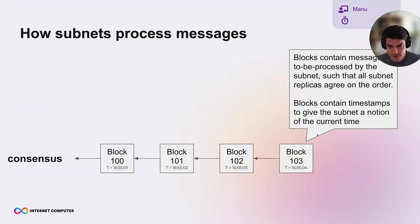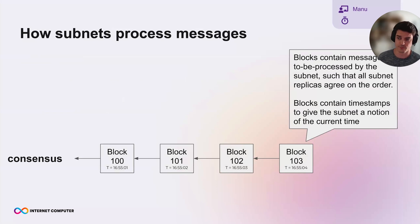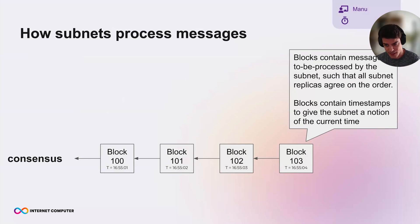Subnets host canisters and process messages. Subnets are powered by many replicas running consensus via a blockchain to agree on the order in which they should process messages. Blocks are created and agreed upon — they contain messages that are to be processed but are not yet processed. Blocks also contain timestamps, which give the subnet a notion of time.